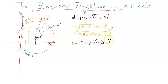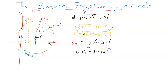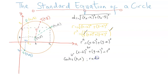This is the standard equation of the circle: (X minus H) squared plus (Y minus K) squared equals R squared, where (H, K) is the center and R is the radius.